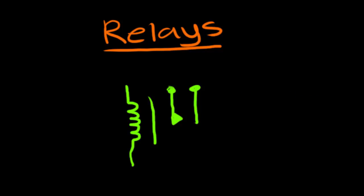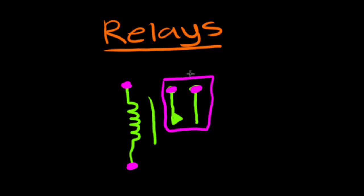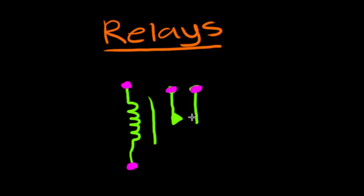There are four connection points on this relay. Now this part of the schematic symbol is your switch part. As you can tell, this is an open switch because the green bit right here is not touching. There is no connection, so it's an open switch — electricity won't be flowing from this terminal to this terminal. This is when the relay is off.